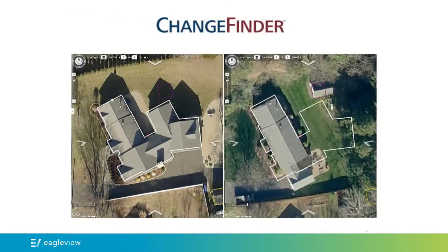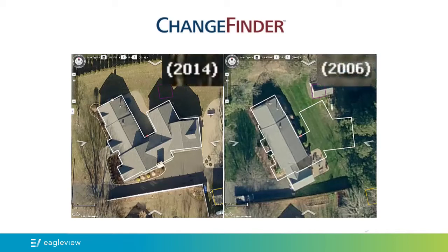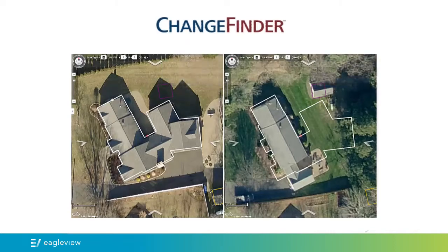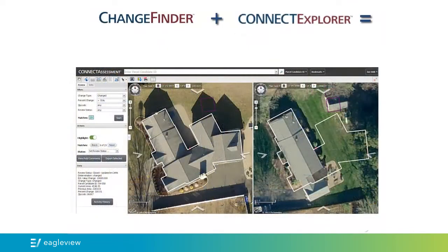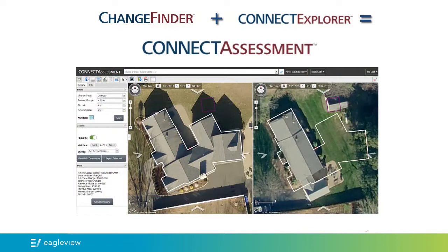Change Finder is a separate product that detects changes in an area that could go undetected, such as additions to existing structures, demolitions, new construction, or other real property features. The process involves comparing existing building outlines from the most current imagery to an older set of imagery to detect changes in your jurisdiction. Connect Assessment combines this project with our online Connect Explorer interface.